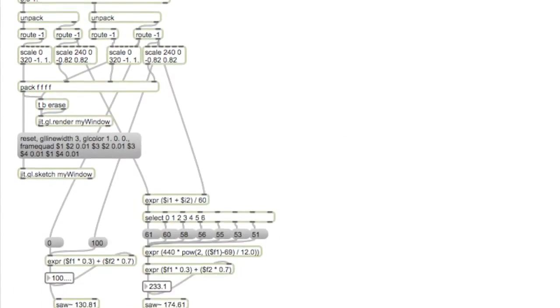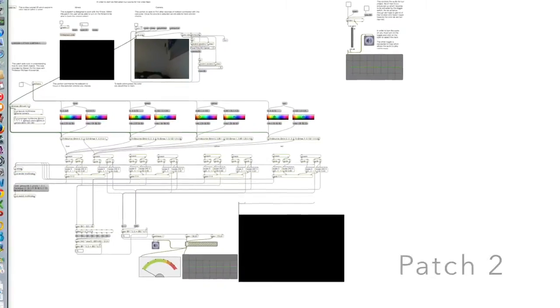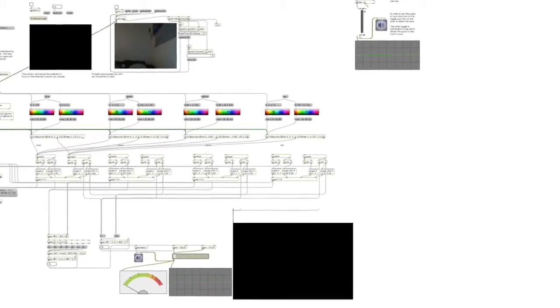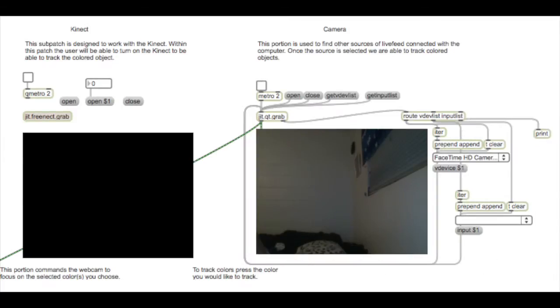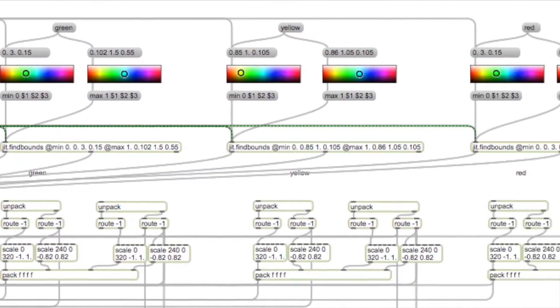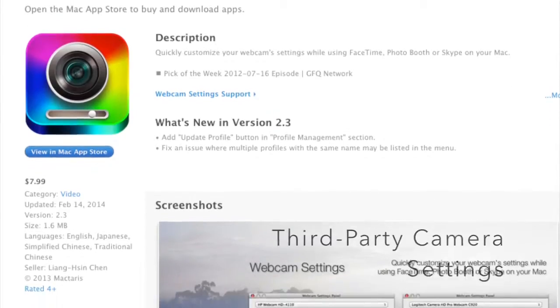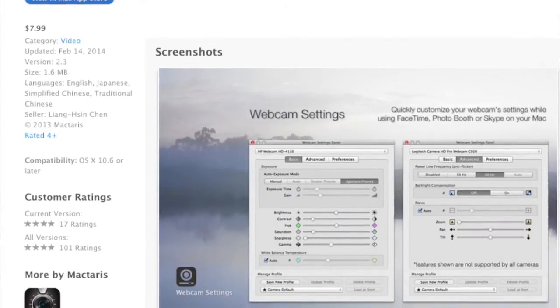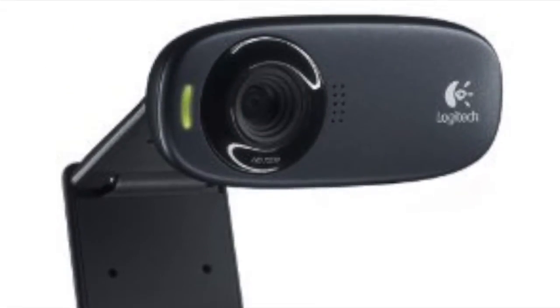The first patch we worked on was a patch received from Steven with his other class. This patch was already tracking the color blue and as such we decided to add on from there. Patches 2 to 3 focus on correcting the colors as well as figuring out which webcam would best capture the colors.